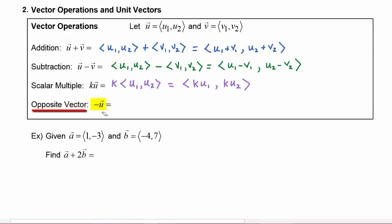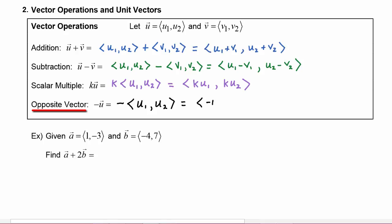To find the opposite of vector u, this is just finding a scalar multiple where k equals negative one. So the opposite of the vector (u1, u2) is equal to the vector (negative u1, negative u2).